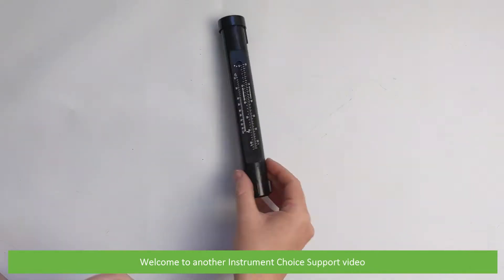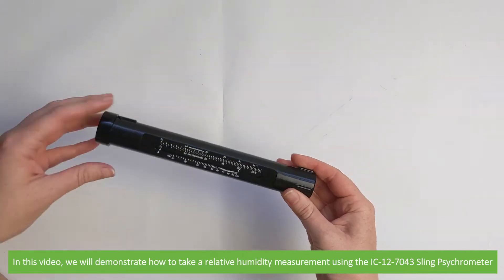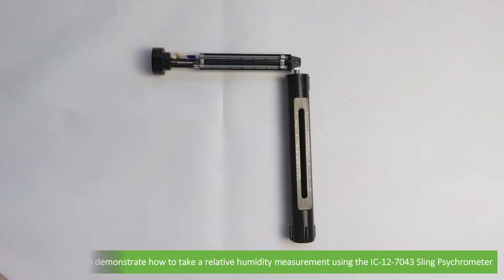Hi and welcome to another Instrument Choice support video. In this video, we'll demonstrate how to take a relative humidity measurement using the IC-12-7043 sling psychrometer.